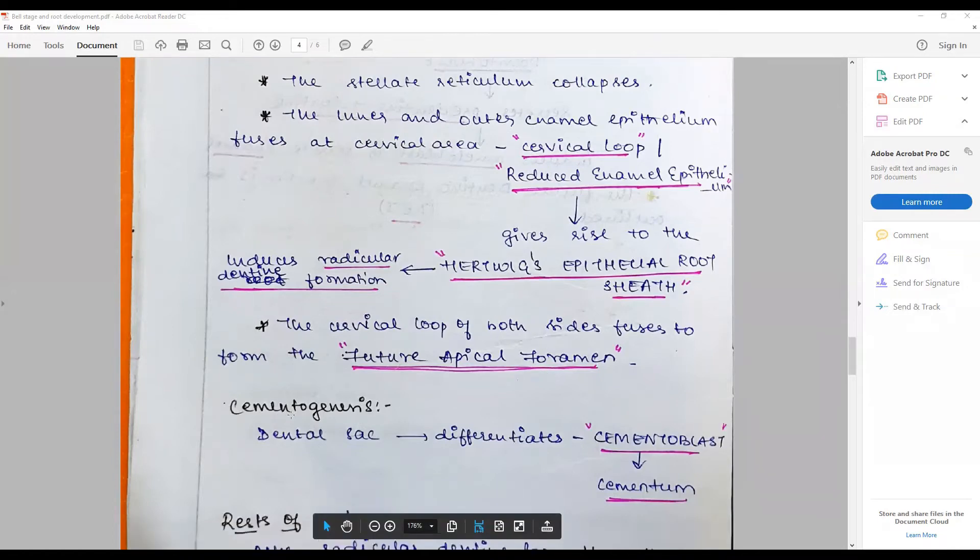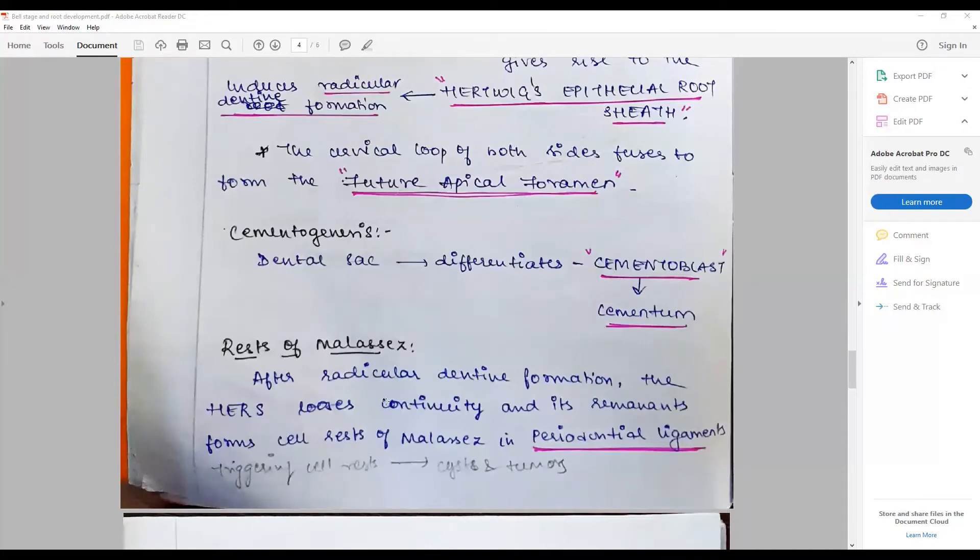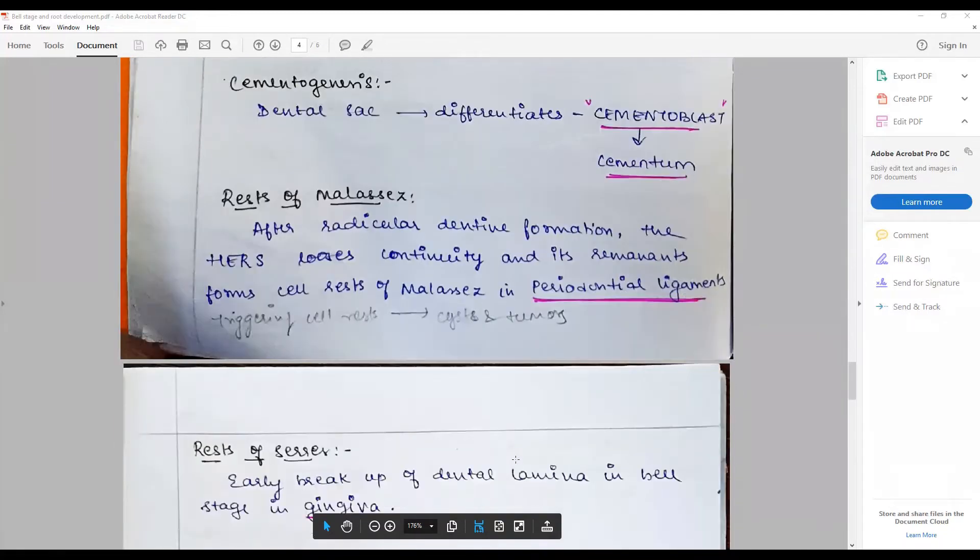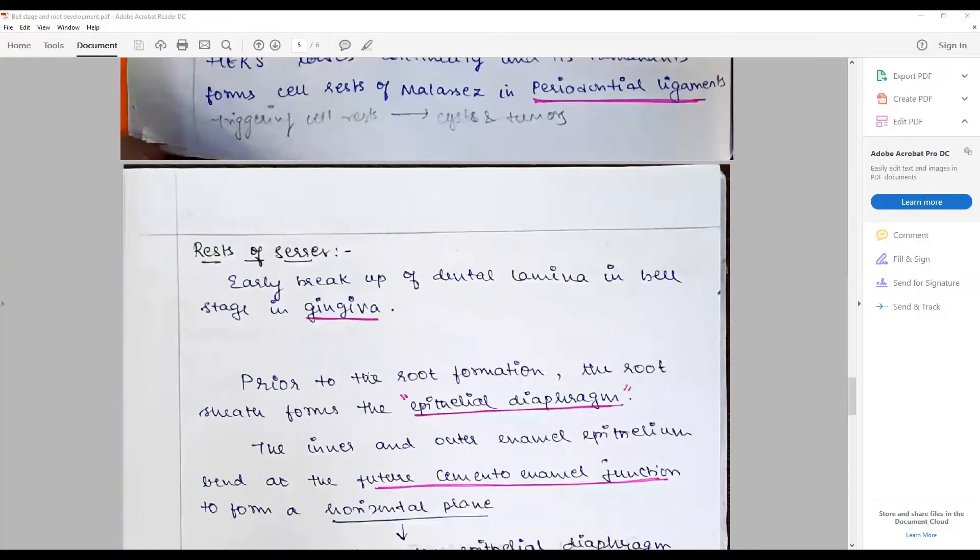This elongates and undergoes apoptosis, exposing the newly forming dentin to the outer surface dental sac, which differentiates into cementoblasts, and that is where cementogenesis occurs. The point here that is missed is about the apoptosis or the breakdown of the epithelial Hertwig's root sheath, causing the newly formed dentin to be exposed to the outer lying dental sac. Cell rests of Malassez: after radicular dentin formation, the HERS loses continuity and remnants form cell rests of Malassez that lie in the periodontal ligament and can trigger cell rests at later point of life to form cysts and tumors of odontogenic origin. The cell rests of Serres - early breakdown of dental lamina in bell stage happens in gingiva, and these cell rests may survive in gingiva and can give rise to cysts and tumors at later phase of life.